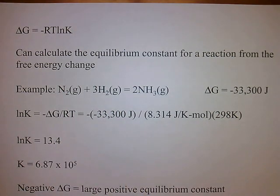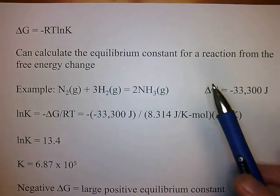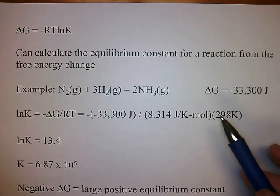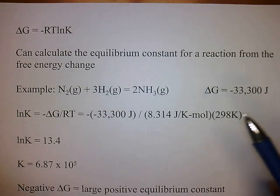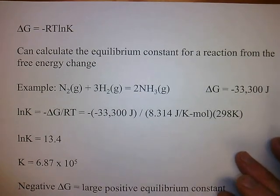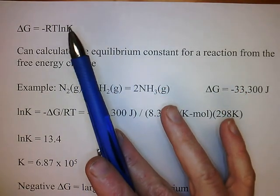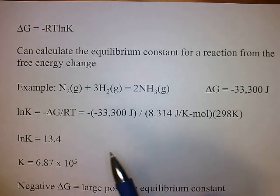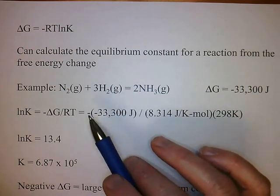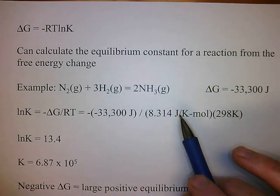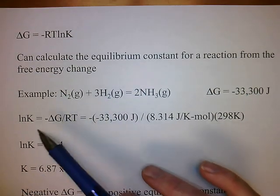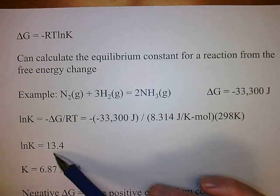Let's look at this reaction: nitrogen plus hydrogen makes ammonia. This is the Haber process for the production of ammonia, where these gases are reacted under pressure. The free energy change is −33,300 joules. If we rearrange for ln K, that would be delta G over −RT. So negative of −33,000 divided by 8.314 divided by 298 gives you 13.4. So ln K equals 13.4.